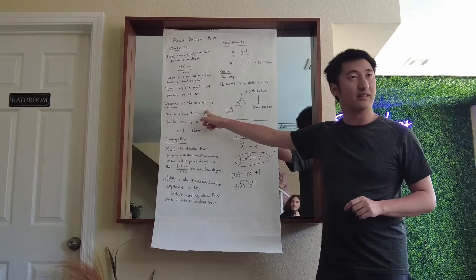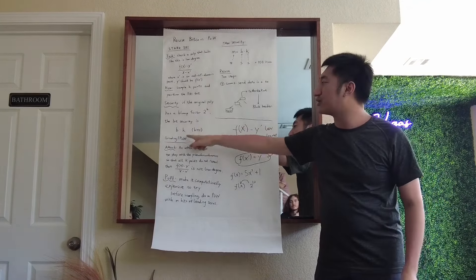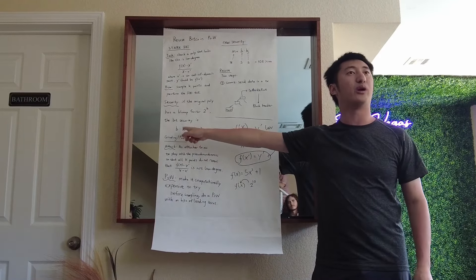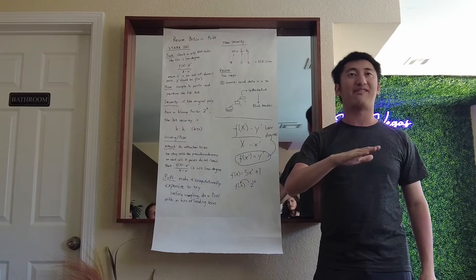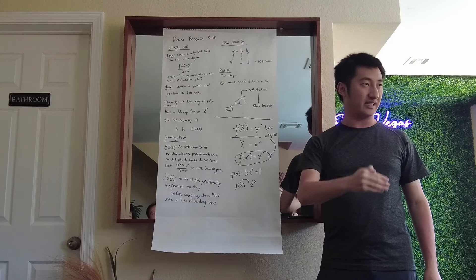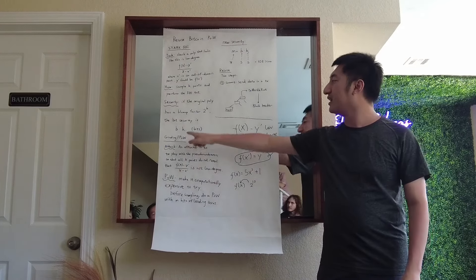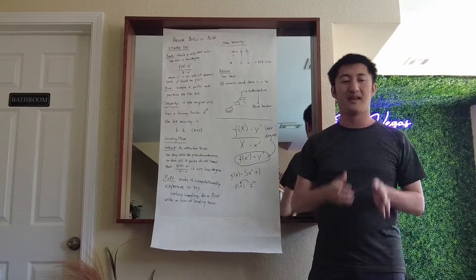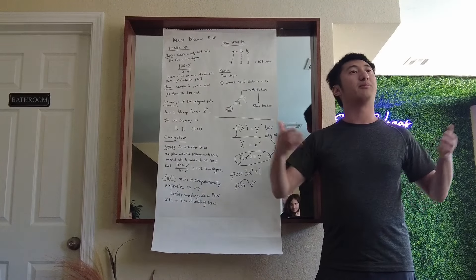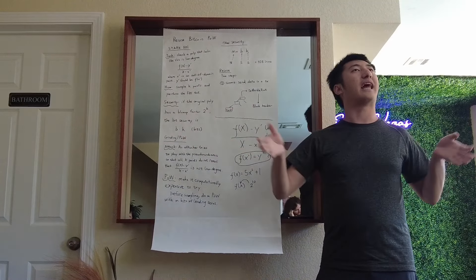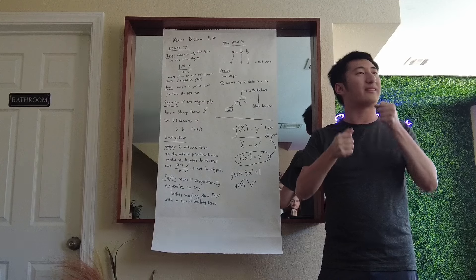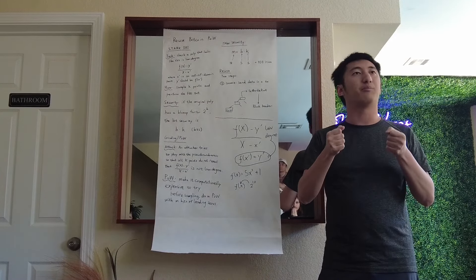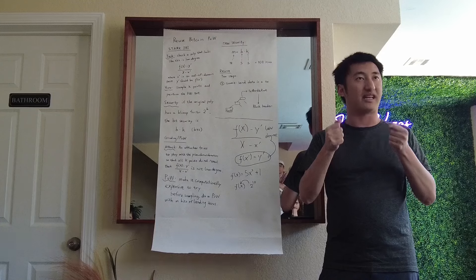But when you lower the blow-up factor, there's a consequence. If you want to maintain the same bit security, then you need to commit more query points. When you commit too many points, the proof becomes much longer. So there's a balance — when deciding on k and b, you trade off between prover efficiency and proof size.